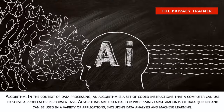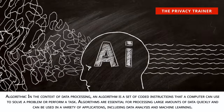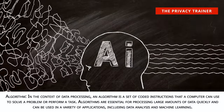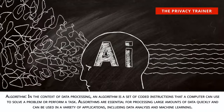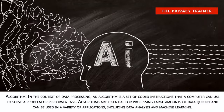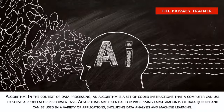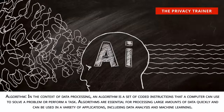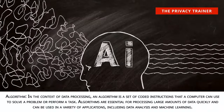Algorithm. In the context of data processing, an algorithm is a set of coded instructions that a computer can use to solve a problem or perform a task. Algorithms are essential for processing large amounts of data quickly and can be used in a variety of applications, including data analysis and machine learning.